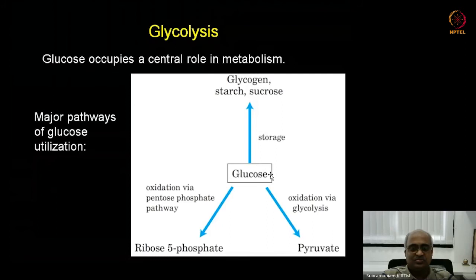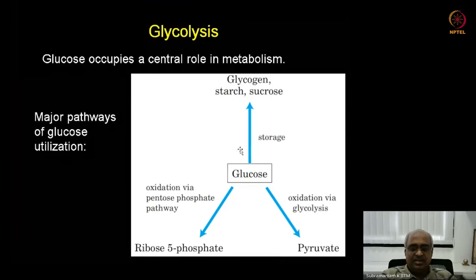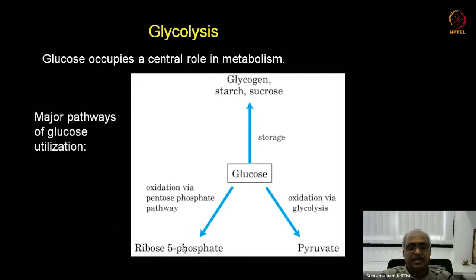Glucose can be oxidized to pyruvic acid via glycolysis. Pyruvic acid is a partially oxidized product of glucose, and it can be fully oxidized to carbon dioxide through another cycle learned after glycolysis. Third, glucose can provide the five-carbon sugar ribose required for nucleic acid biosynthesis. So glucose serves as a storage of energy, a primary source of energy, and a precursor for other important macromolecules.